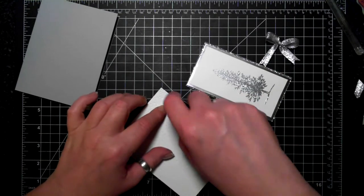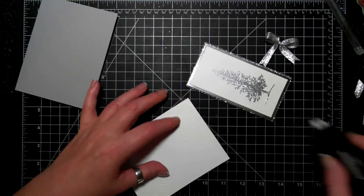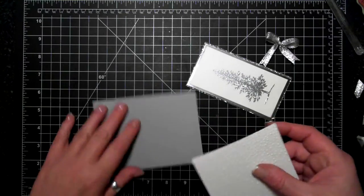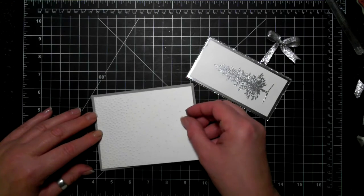Now I'm taking some Fast Fuse and putting it on the embossed white piece—that's just a plain Whisper White thin layer.